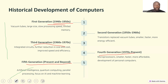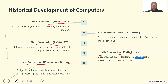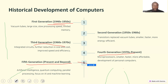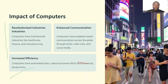The fifth generation is where we talk about artificial intelligence, quantum computing, and parallel processing. In this generation we focus on AI and machine learning, robots, and information at our fingertips much faster than ever before. That covers the historical development.